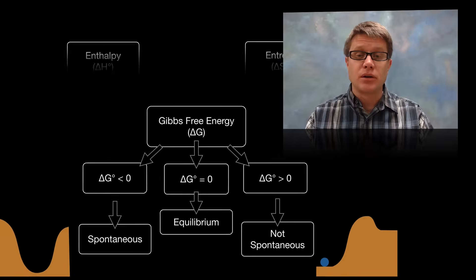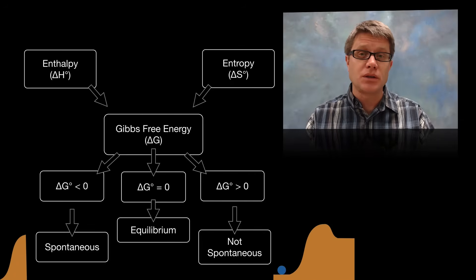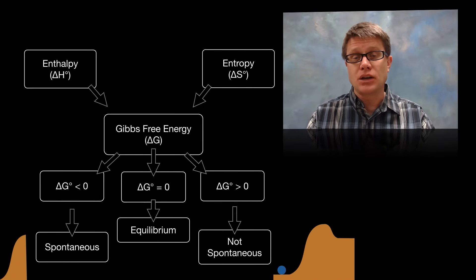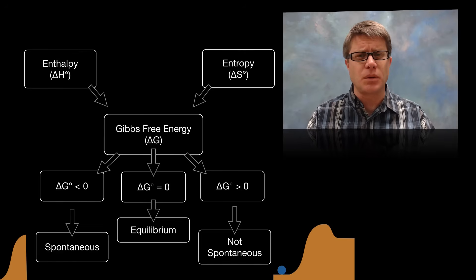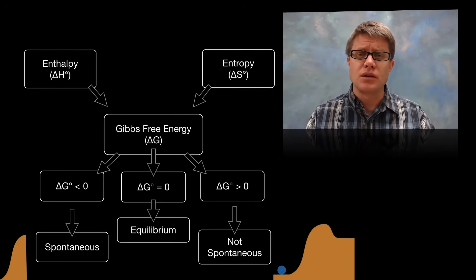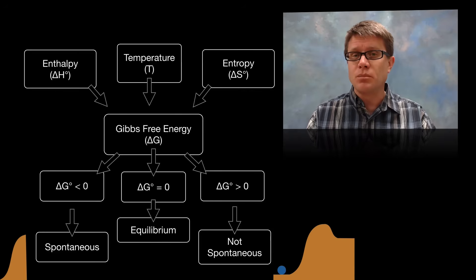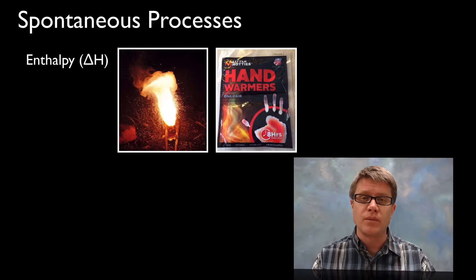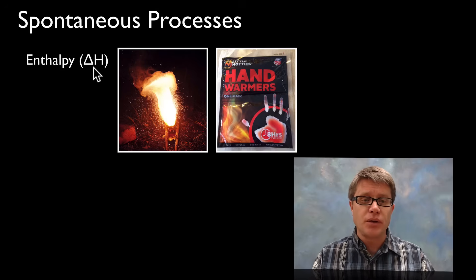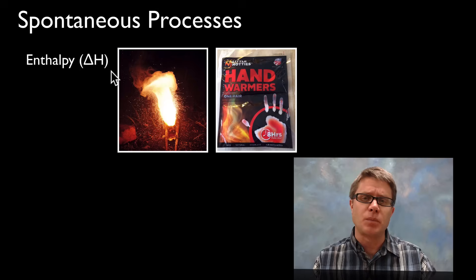In the last video we learned that the two things that really contribute to Gibbs free energy are enthalpy and entropy. Those two things together help us determine if it's a spontaneous or non-spontaneous reaction, but they don't answer every question. What's missing is temperature — T is going to be incredibly important. If we're trying to figure out if a process is spontaneous, one of the biggest factors is enthalpy. A delta H that's negative is a good indication of a spontaneous reaction.